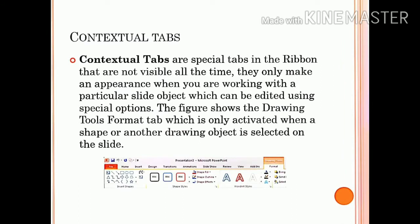Next is contextual tabs. Contextual tabs are special tabs in the ribbon that are not visible all the time. They only make an appearance when you are working with a particular slide object which can be edited using special options. The Drawing Tool Format tab is only activated when a shape or drawing object is selected on the slide. The commands for editing a picture will not be available until the picture is selected. As soon as a picture is selected, the picture tools format tab will appear. When you deselect the object, the contextual tabs disappear.